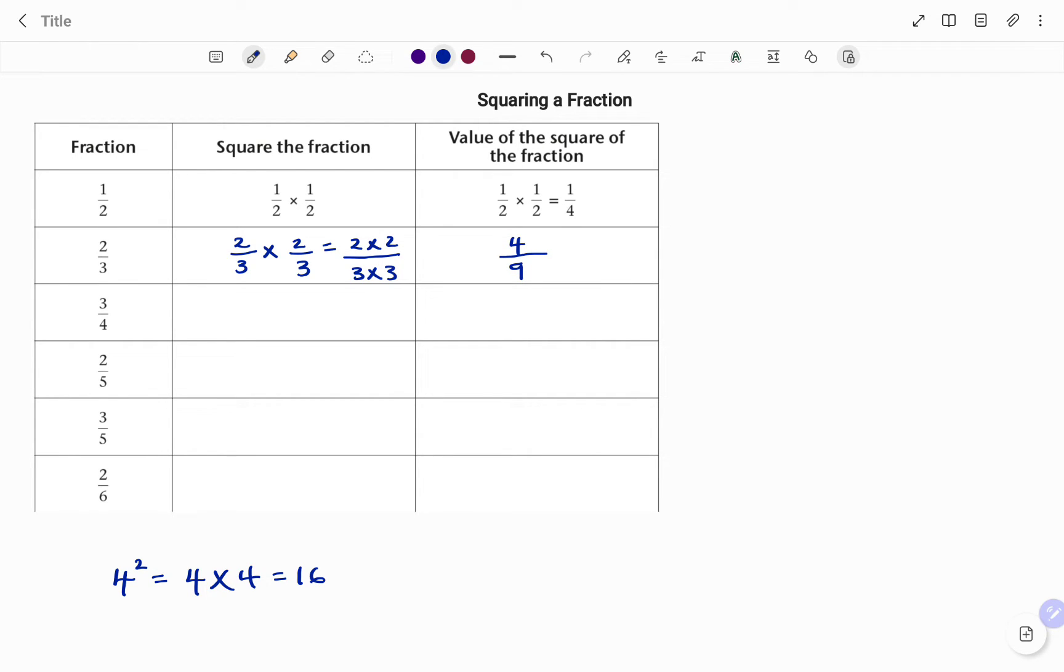In the next example, we have 3 over 4. To square 3 over 4, that is equal to 3 over 4 times 3 over 4. That will be 3 times 3 for our numerator, and 4 times 4 for our denominator. 3 times 3 is 9, and 4 times 4 is 16.